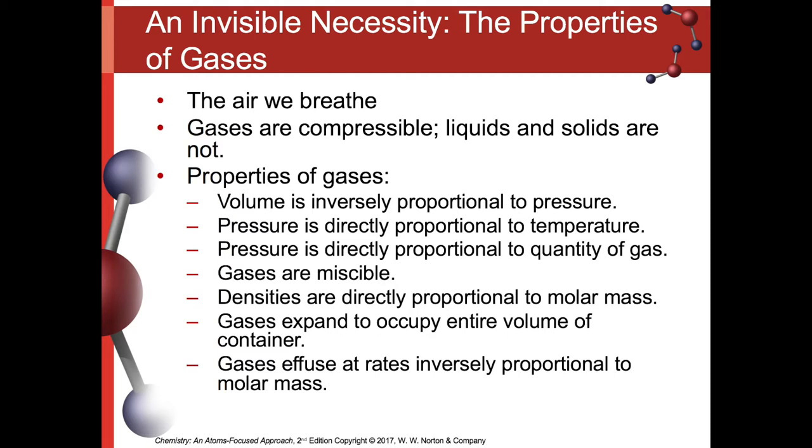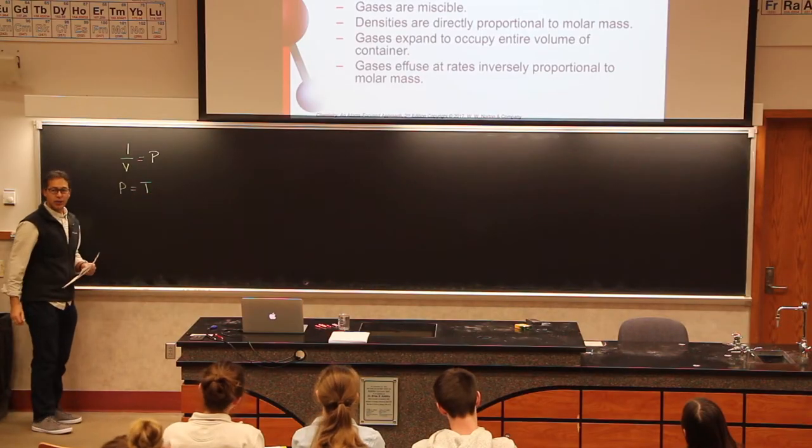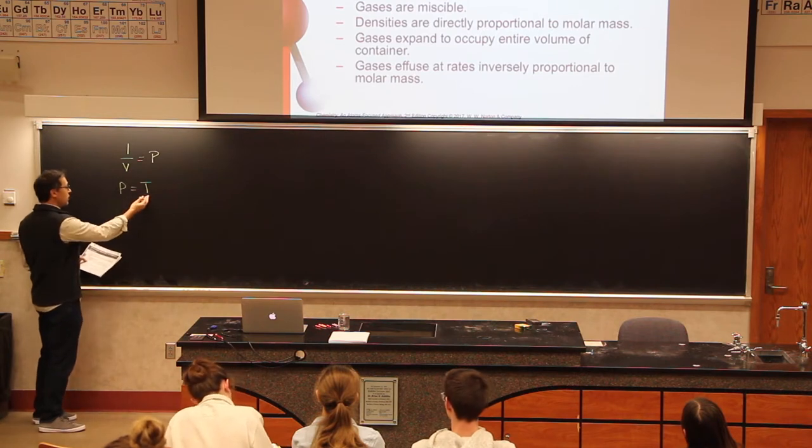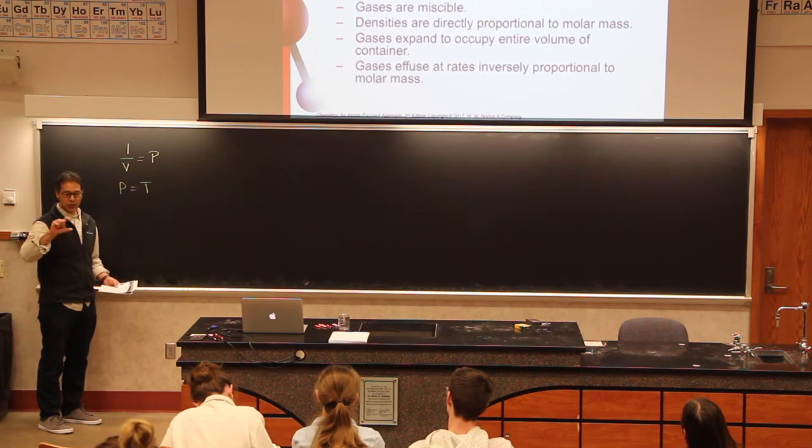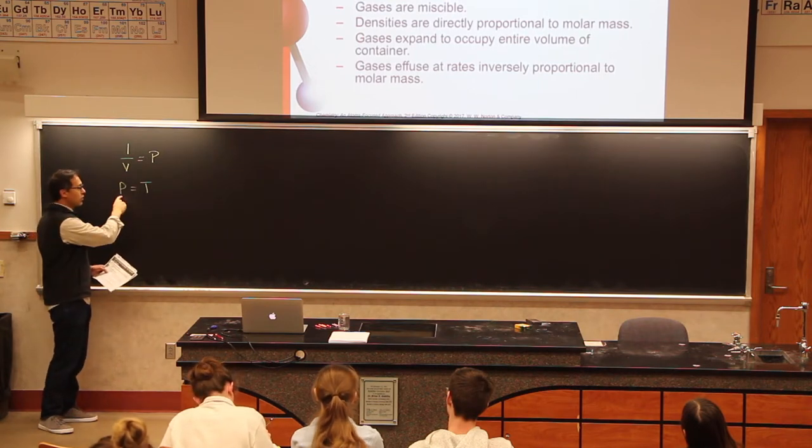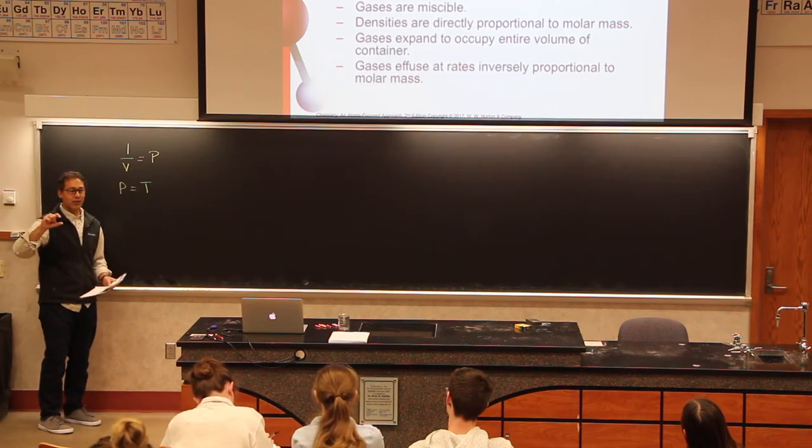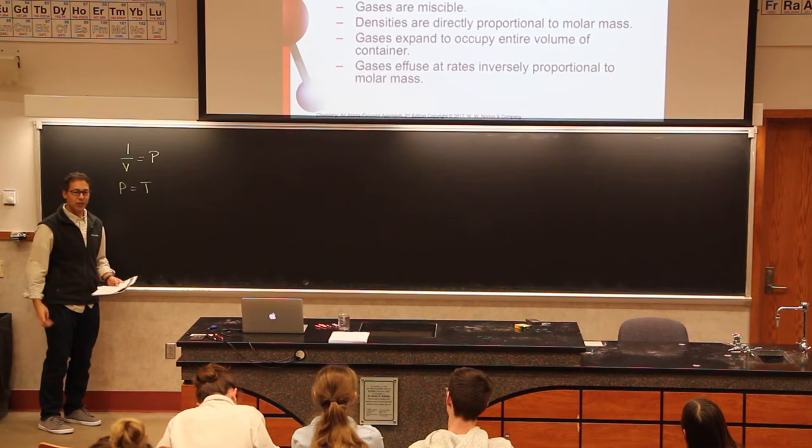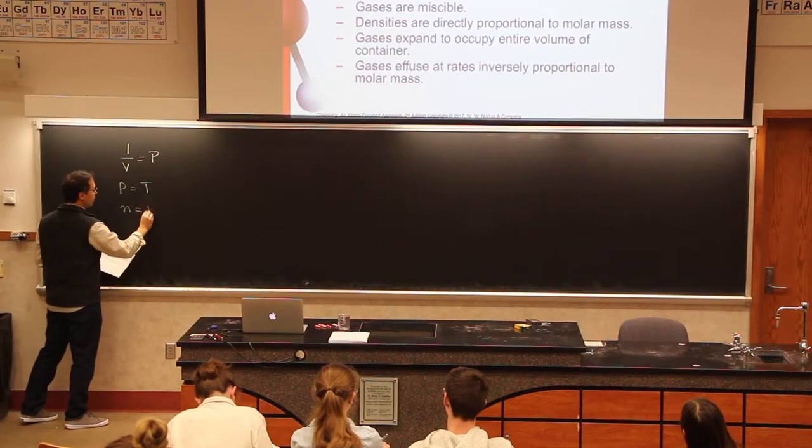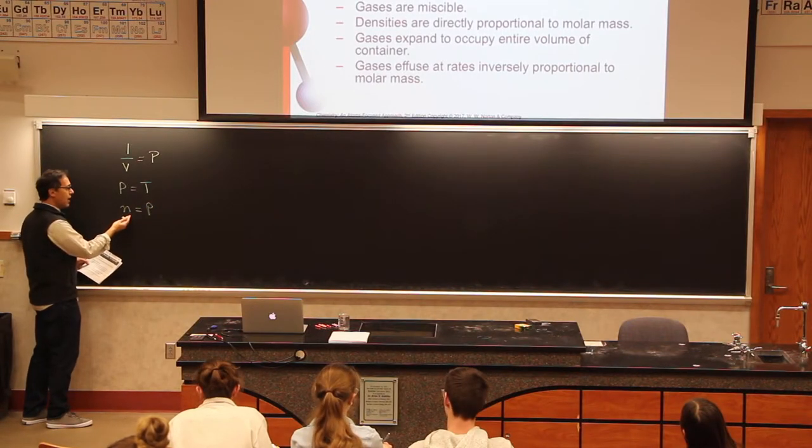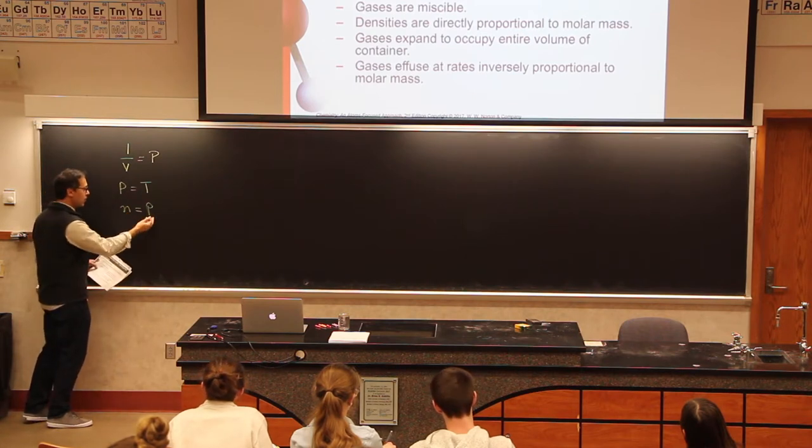Pressure is directly proportional to temperature. So as we increase the temperature, we increase the pressure. And as we decrease the temperature, we decrease the pressure. This is something I notice about this time of year. I have this car with really small, thin tires, and when it gets really cold outside, the temperature goes down and then the pressure goes down. And so those tires seem like they're going flat every fall. I have to put more air into them because it's colder out.